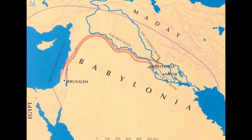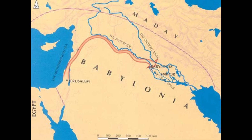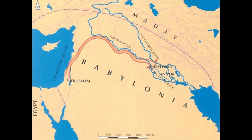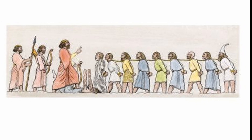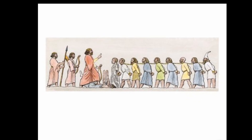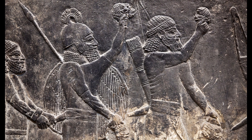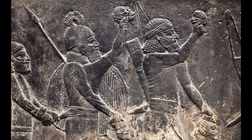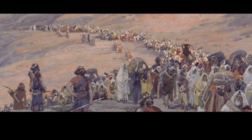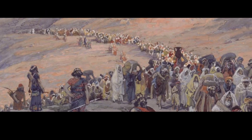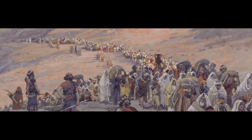1. The Babylonian Exile — 586 BCE. Following the destruction of the First Temple in Jerusalem, the Babylonian Empire exiled a significant portion of the Judean population to Babylon. While traumatic, this event involved uprooting and displacement rather than attempted eradication.